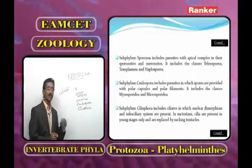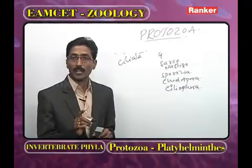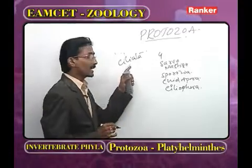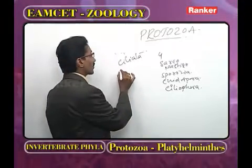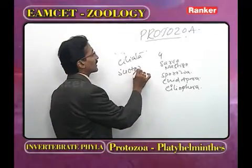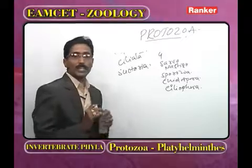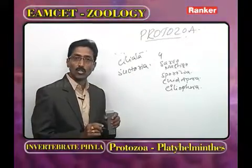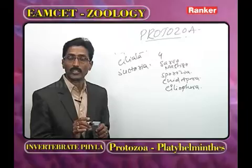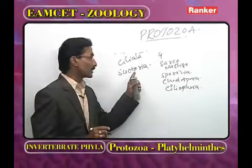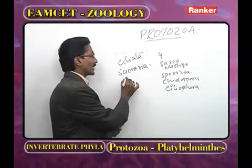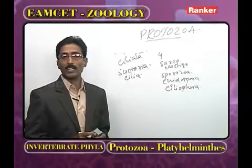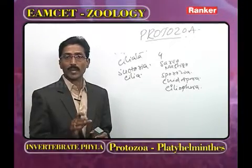Examples for Ciliata include Paramecium and Vorticella. One exception in Ciliata is Suctoria — the only protozoans in which reproduction is by budding. In young Suctoria, cilia are present, but in the adult stage they are replaced by tentacles.